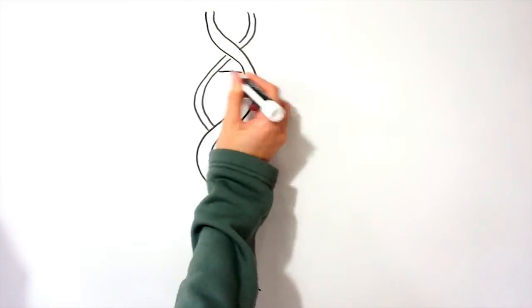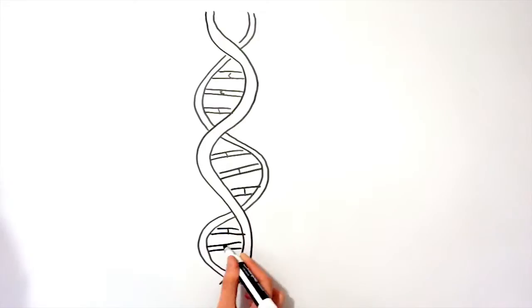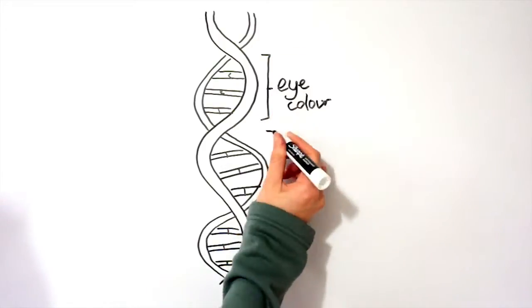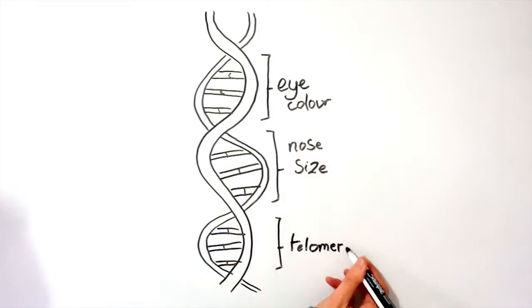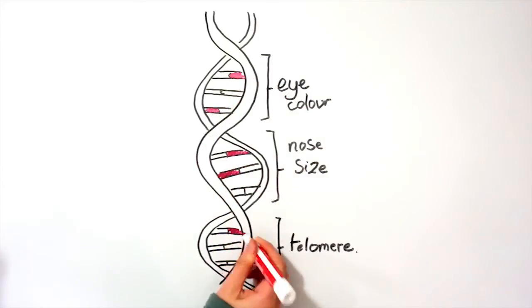The reason we age is essentially due to oxidative damage to our genes. At the end of our genes are strands of DNA which don't code for anything in the body. These strands are called telomeres and their role is to protect the DNA from damage and unravelling.